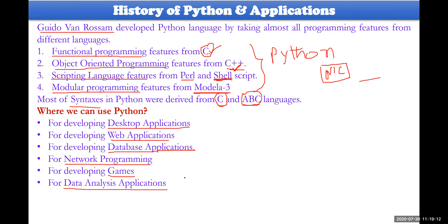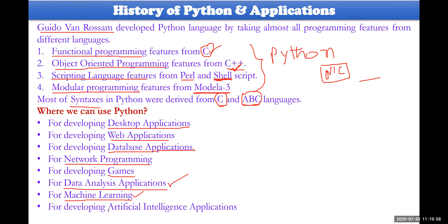Such kind of applications can be done by using Python. Python can also be used in machine learning — because you are a human being you can learn on your own, but a machine always follows the instructions you provide. Those instructions must be given in a proper way so the machine can also learn. Python can also be used for artificial intelligence applications.